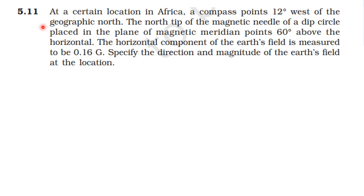Magnetism and Magnetic Length — Problem 5.11. At a certain location in Africa, a compass points 12 degrees west of the geographic north. The north tip of the magnet needle of a dip circle placed in the plane of the magnetic meridian is 60 degrees above the horizontal. The horizontal component of the earth's field is measured to be 0.16 Gauss. Specify the direction and magnitude of the earth's field at the location.